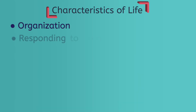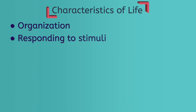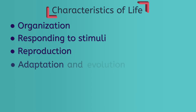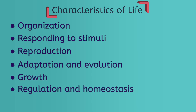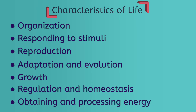We covered seven characteristics of life, namely: organization, responding to stimulus, reproduction, adaptation and evolution, growth, regulation and homeostasis, and the processing of energy. A key point stated at the beginning of the lesson was that in order to be considered alive, something has to have all seven characteristics.